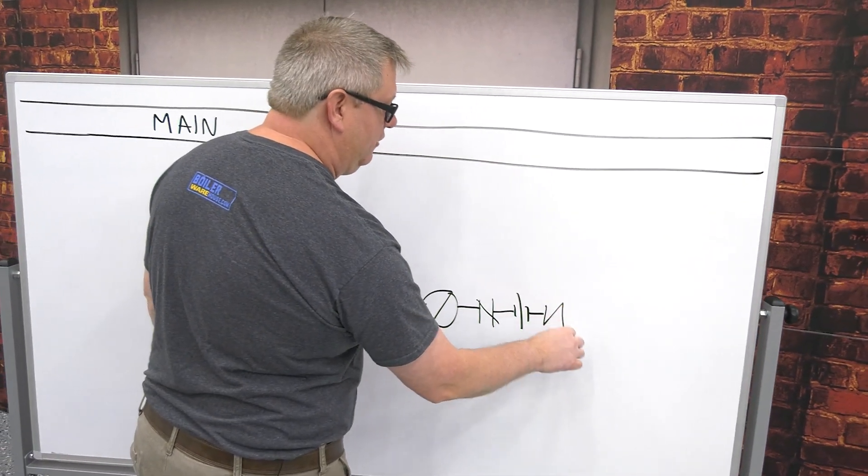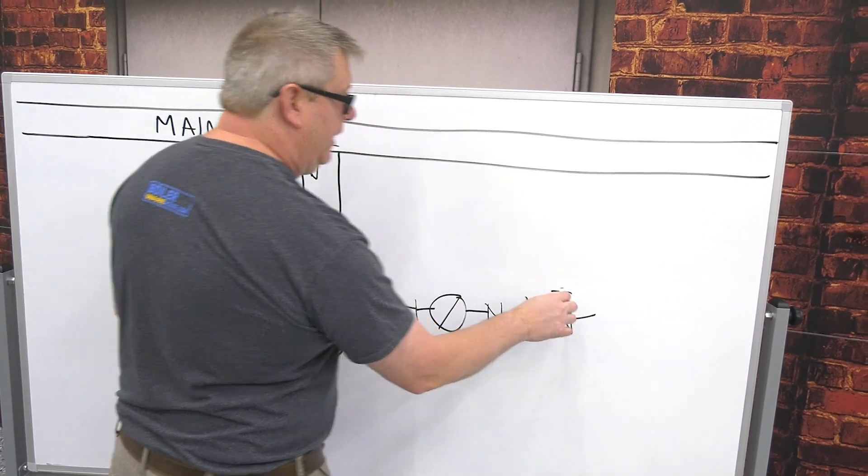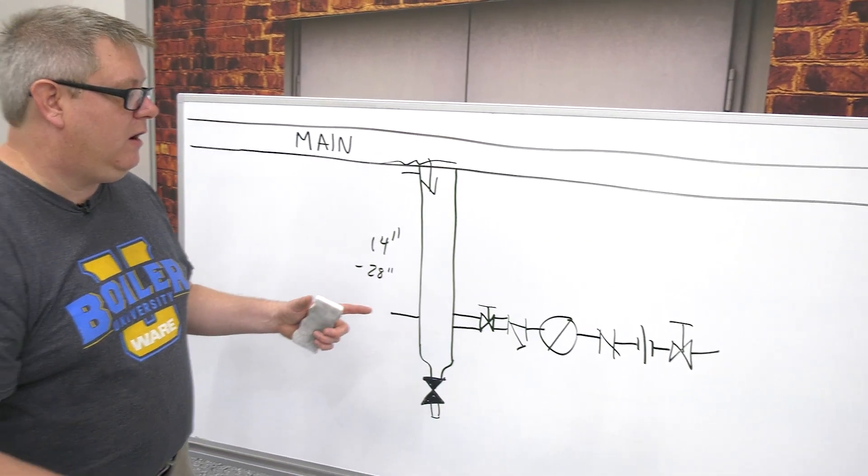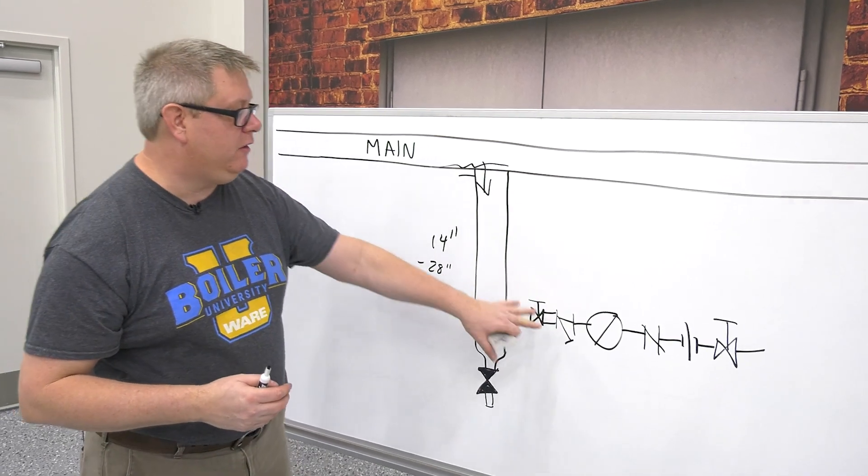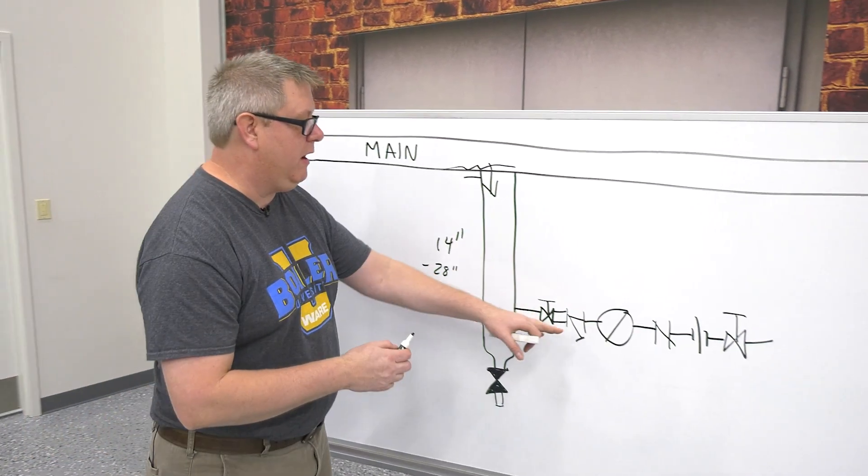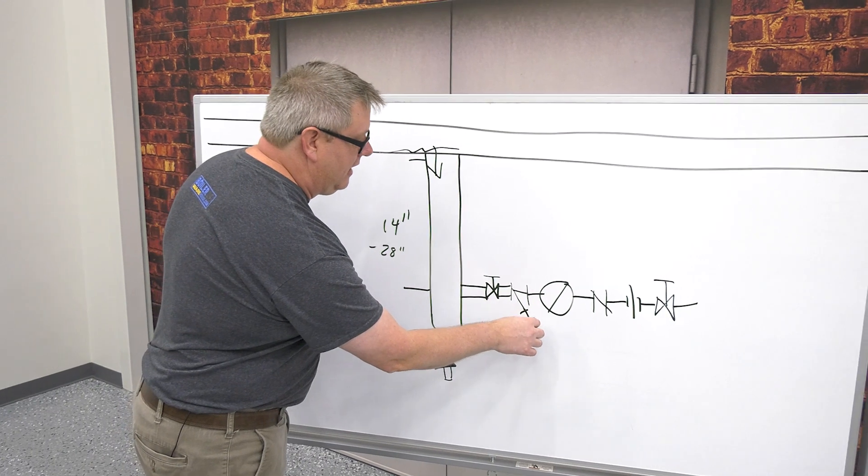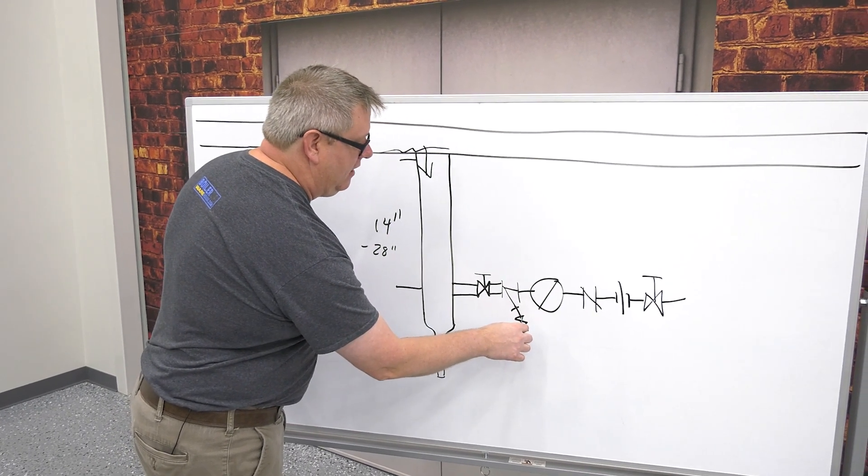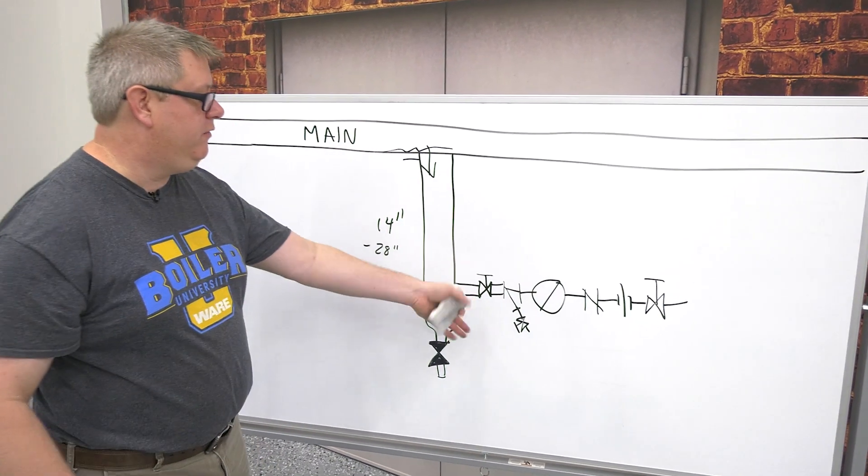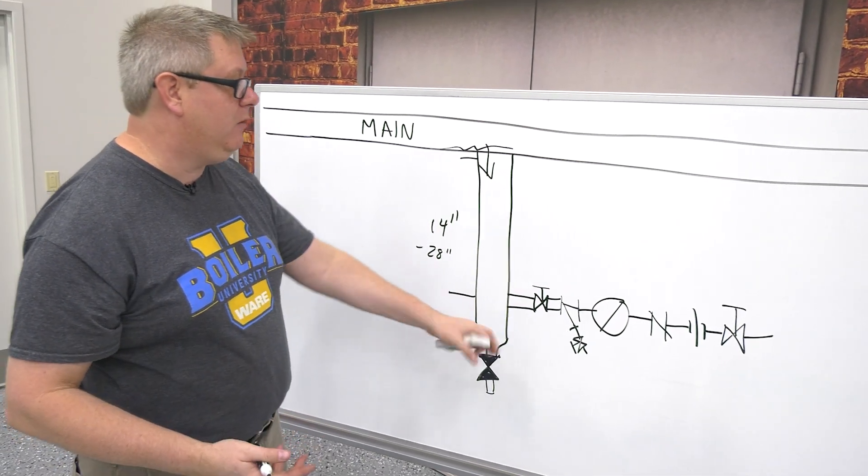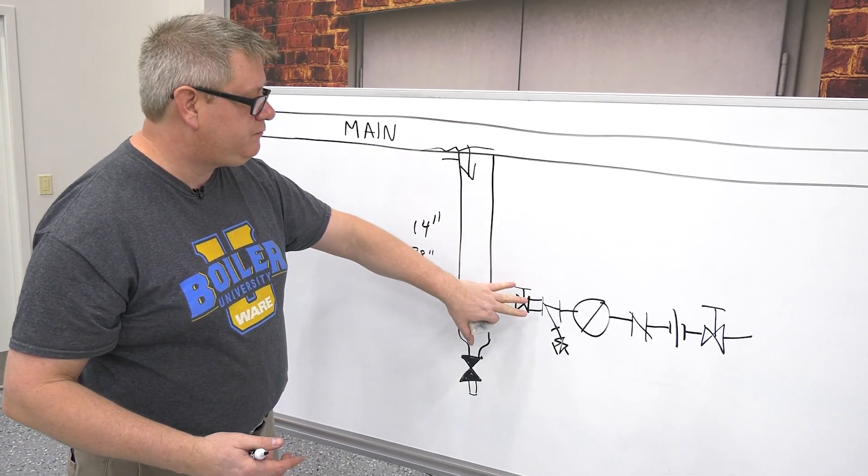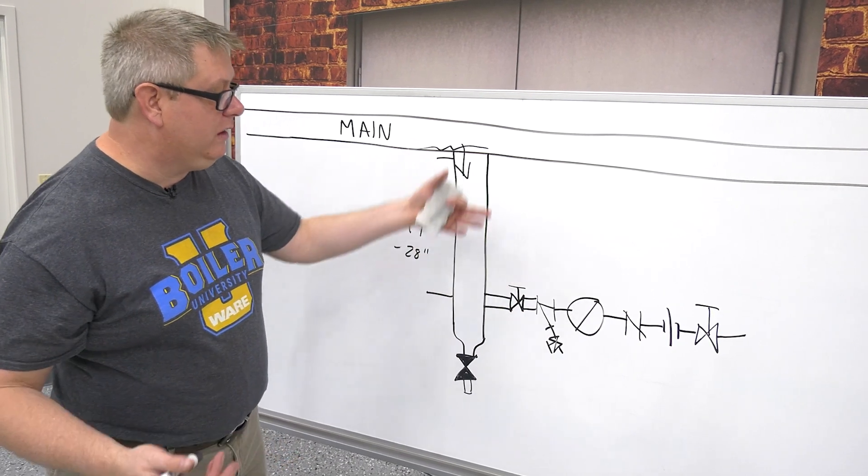And then we'll have another isolation valve. Now every plant's got different rules. We may not be able to blow down this strainer trusting that that valve works by removing the plug. So it's not a bad idea to put a valve on the outlet of the strainer. That way we can open that valve and not have to worry about this valve holding completely.